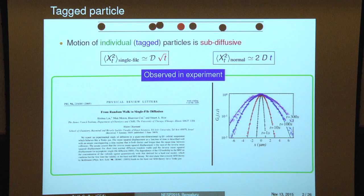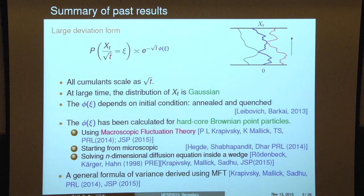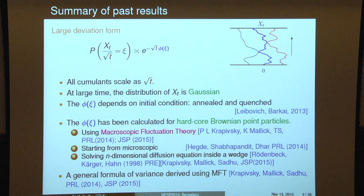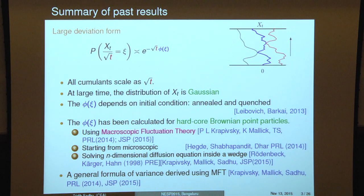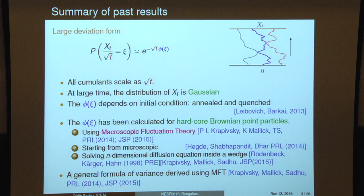It was also found, which was already known in theoretical calculations, that at large time the distribution of the tagged particle position tends to a Gaussian distribution. The only difference is that the width grows as t to the power one quarter. There has been a plethora of theoretical works in the past few decades. Rather than reviewing those, I will talk about recent works which discussed large deviation functions. It is known that if you look at the distribution of the tagged particle position at one time, rescaled with time, it has a large deviation form: it goes as exponential minus square root of t times a large deviation function.